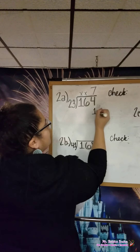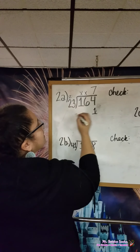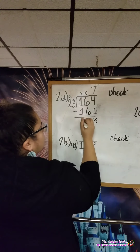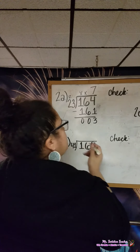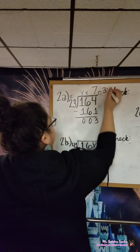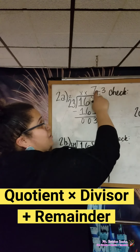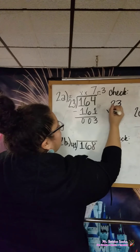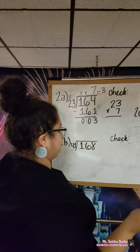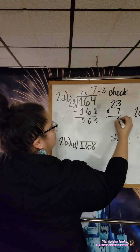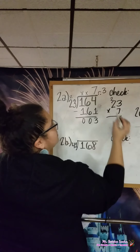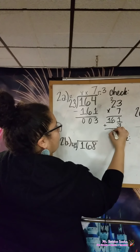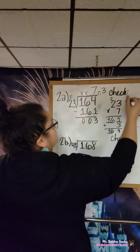With 7 in the quotient: 7 times 3 is 21, put the 1 down and carry the 2. 7 times 2 is 14, plus 2 is 16. That looks much better. Subtract: 4 minus 1 is 3, 6 minus 6 is 0, 1 minus 1 is 0. Compare — that's less than 23. Nothing to bring down, so that's my remainder of 3. To check, multiply your quotient by the divisor and add the remainder: 23 times 7 is 161, plus 3 is 164. My check matches, so I put a big happy check mark.